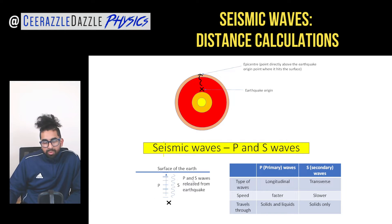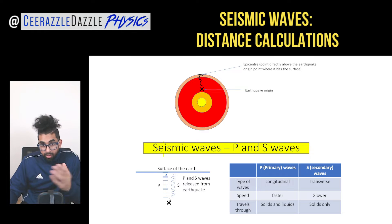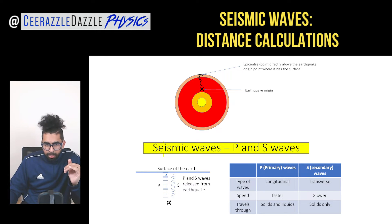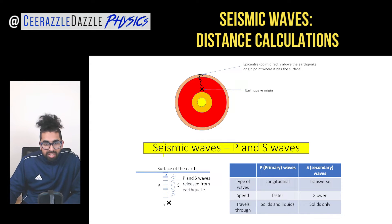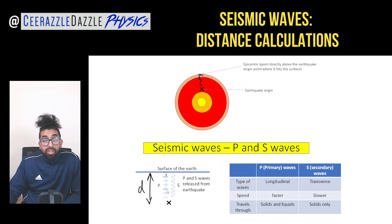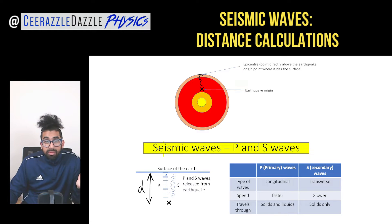This diagram is what we're going to be talking about today. You can see the surface of the earth and point X where the earthquake is created. The P wave and S wave both travel out and hit the surface. We're going to talk about how to work out that distance using the velocity and the times of the P wave and S wave.